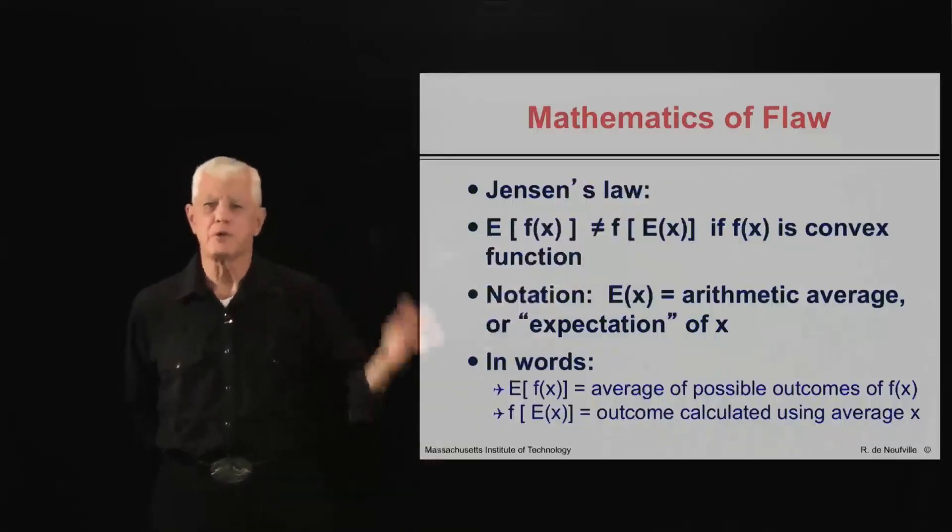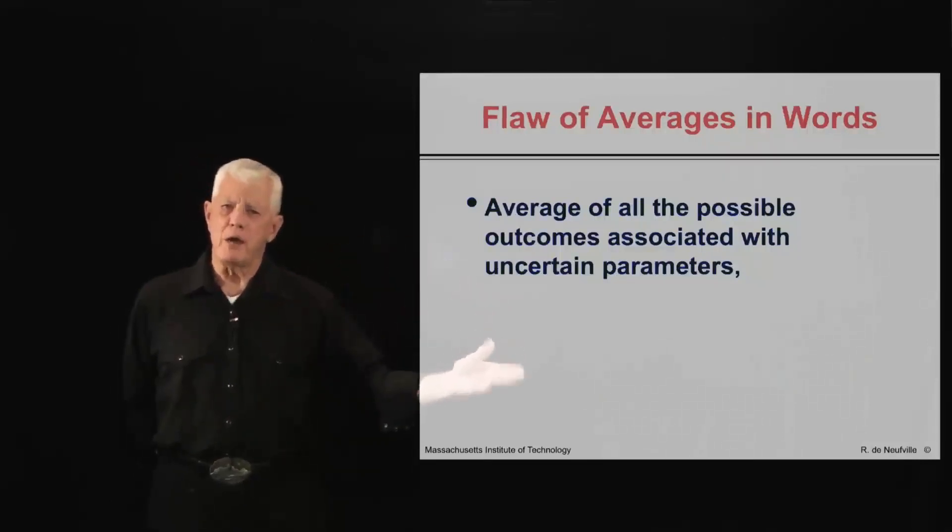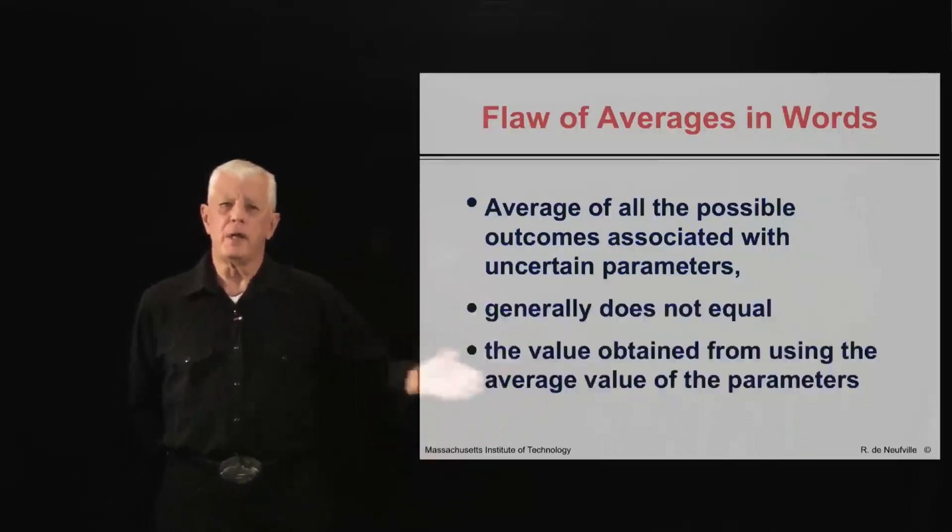You have to look at the whole distribution or some approximation of the whole distribution. So in words, the flaw of averages is the average of all possible outcome associated with uncertain parameters generally does not equal the value obtained from using the average value of the parameters. That's the flaw of averages in words.